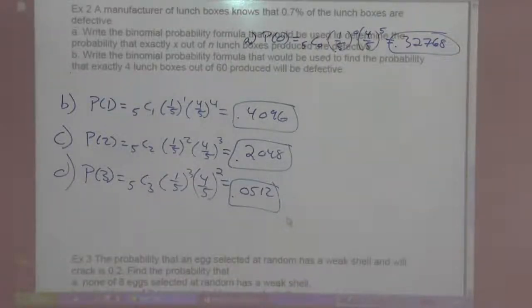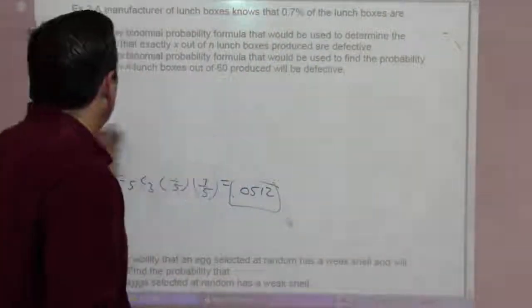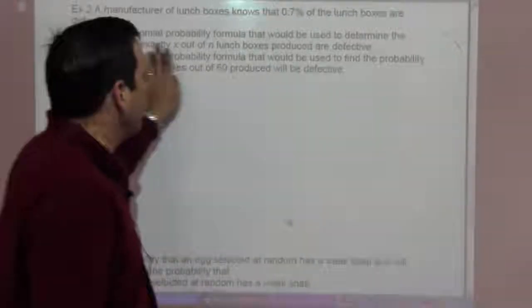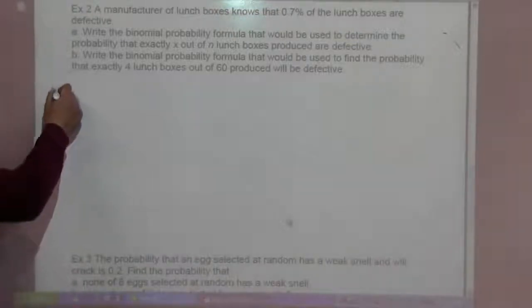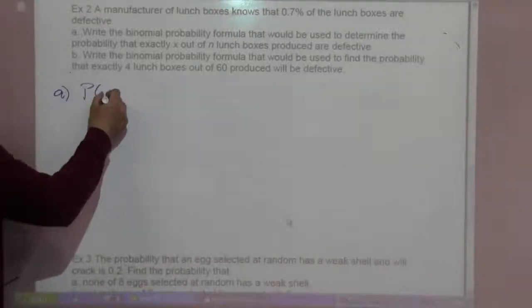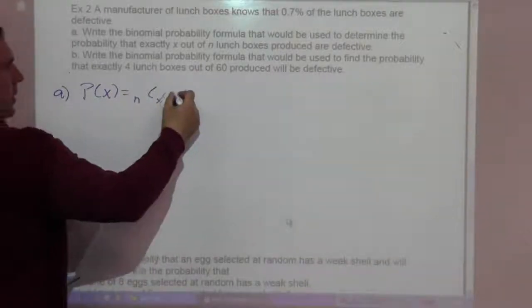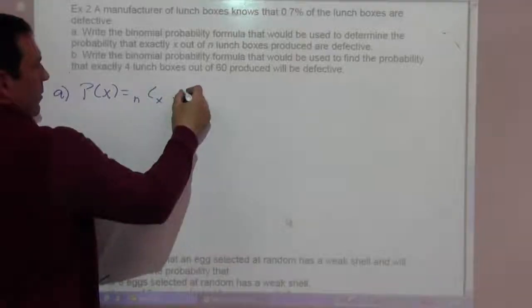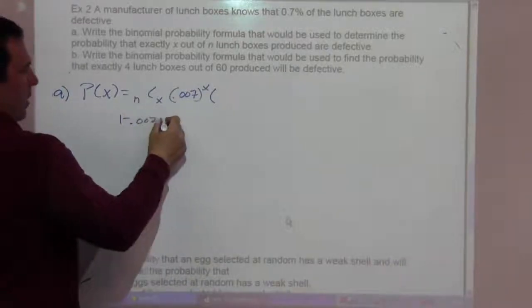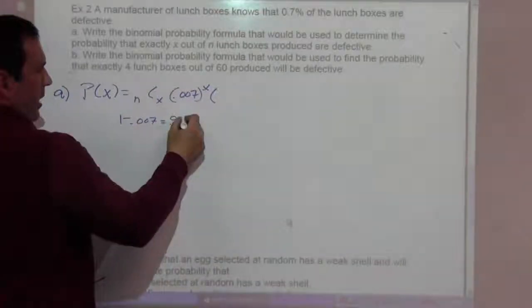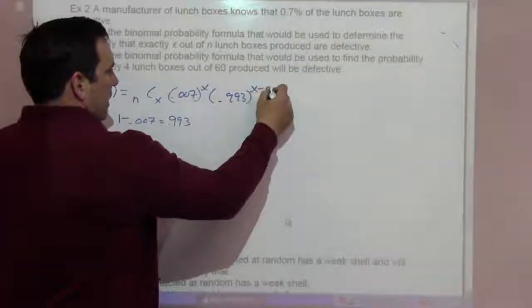Example 2: A manufacturer of lunchboxes knows that .7% of the lunchboxes are defective. Write a binomial probability formula that would be used to determine the probability that exactly x out of n lunchboxes are defective. That's the probability of x is n choose x times .007 to the x power times .993 to the n minus x power.